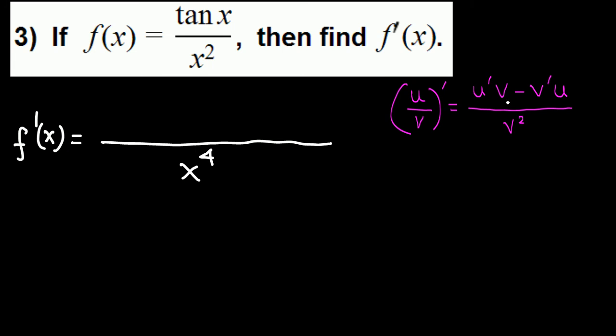On the top, u prime v: derivative of top, derivative of tangent x, which is secant squared x, times bottom x squared, minus derivative of bottom, derivative of x squared is 2x, times top, which is tangent x.